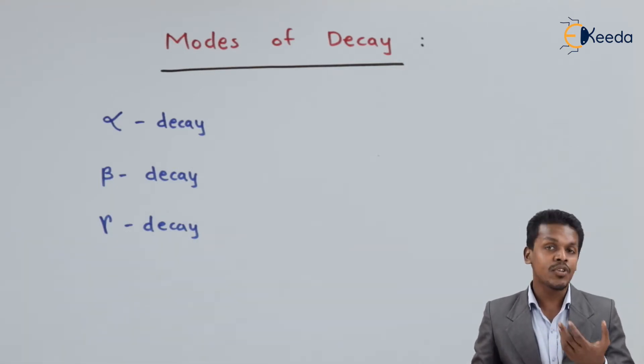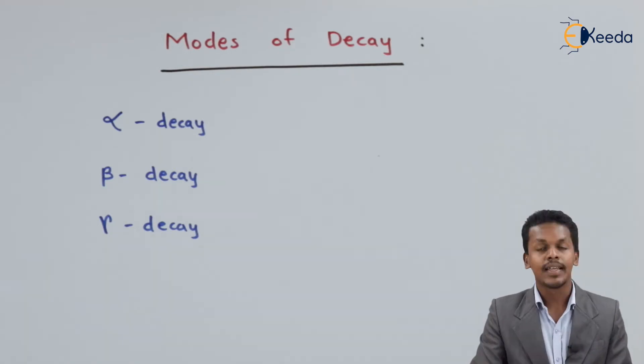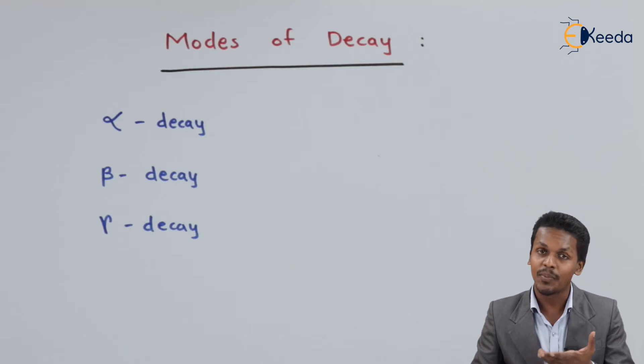Alpha decay is the emission of alpha particles by radioactive elements. In that case, the alpha particles are almost resembling that of the helium atom, having an atomic mass of 4 and atomic number of 2.